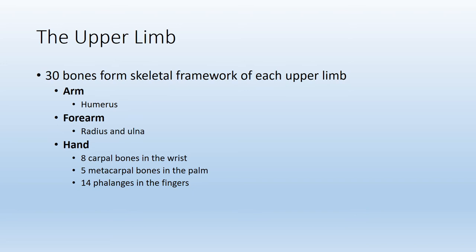Moving into the upper limb, there are approximately 30 bones in each upper limb, 60 total. There is one bone in the arm (shoulder to elbow): the humerus. The forearm (elbow to wrist) has two bones: the radius and the ulna. In the hand, we have eight carpal bones in the wrist, five metacarpal bones in the palm, and 14 phalanges making up the fingers.